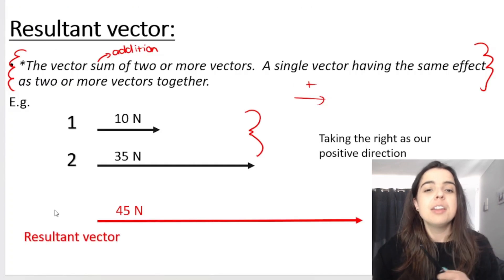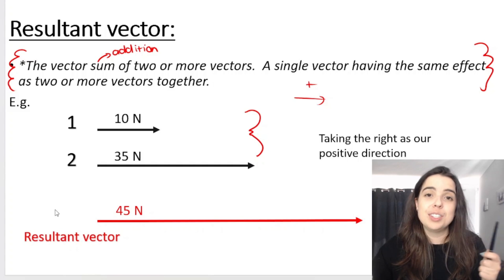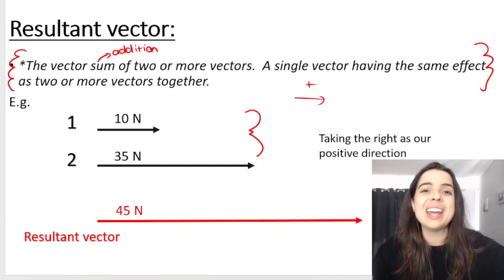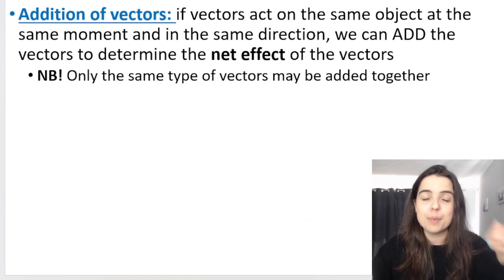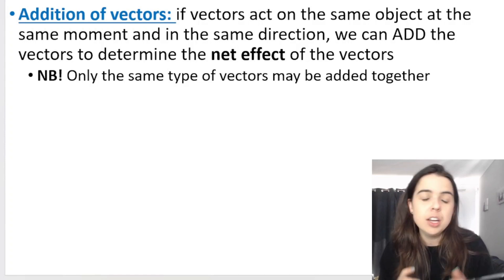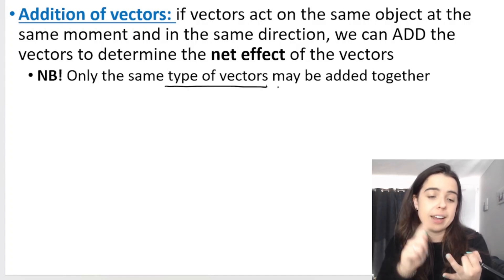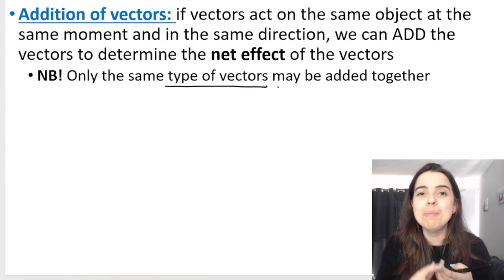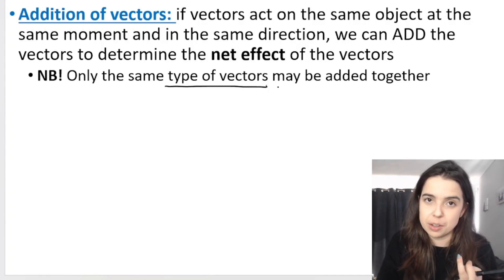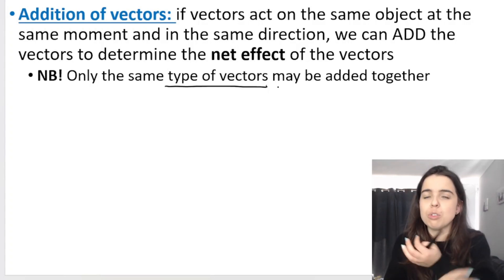What we did in that previous example to work out the net or resultant vector is we used addition of vectors. If vectors act on the same object at the same moment and in the same direction, we add those vectors to determine the net effect. It's very important to note that only the same type of vectors may be added together — a force vector plus a force vector. We can't add a displacement vector to a velocity vector; those are two separate things.